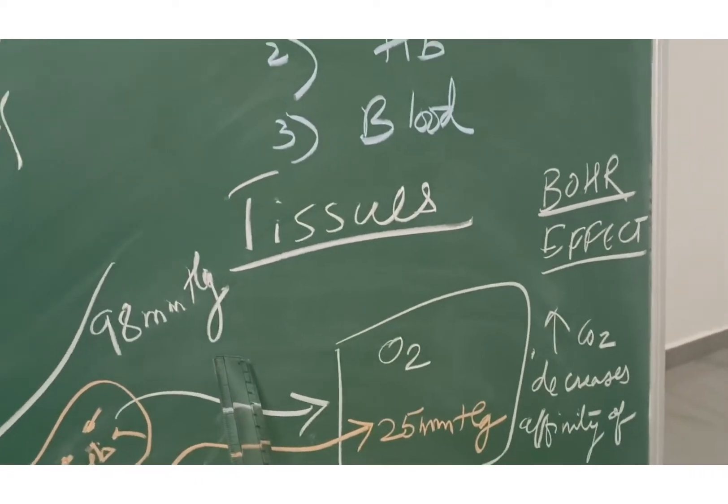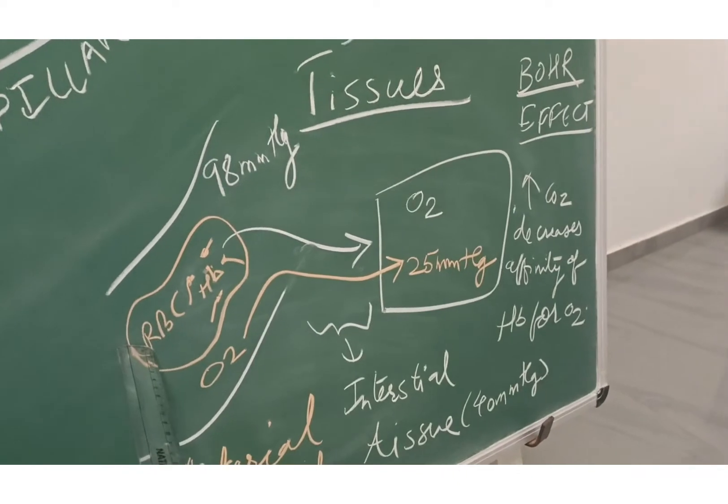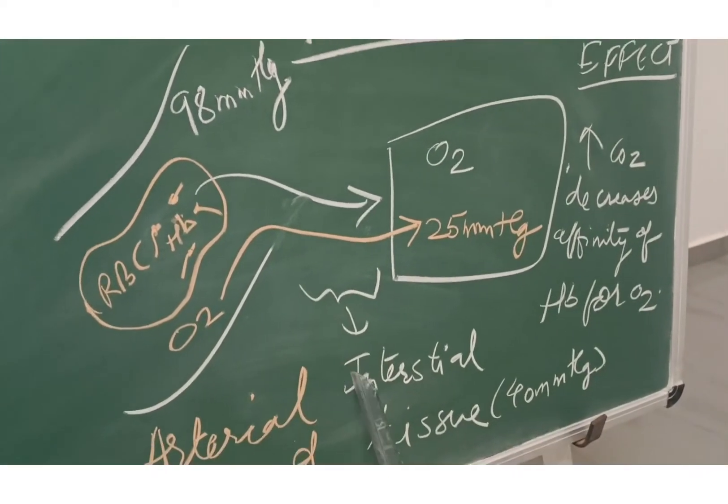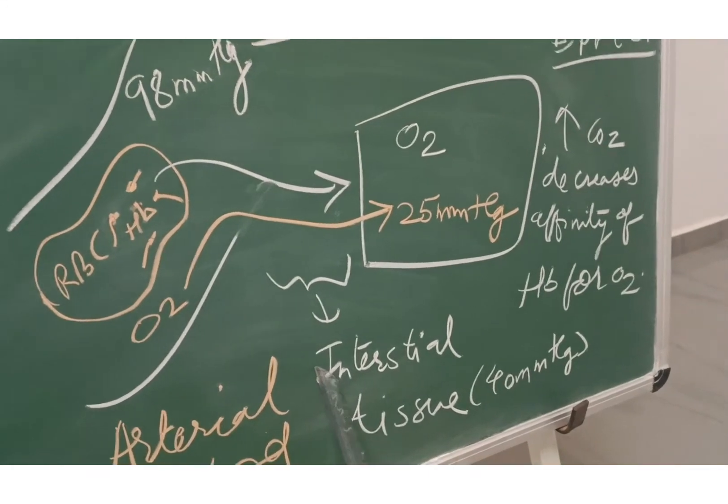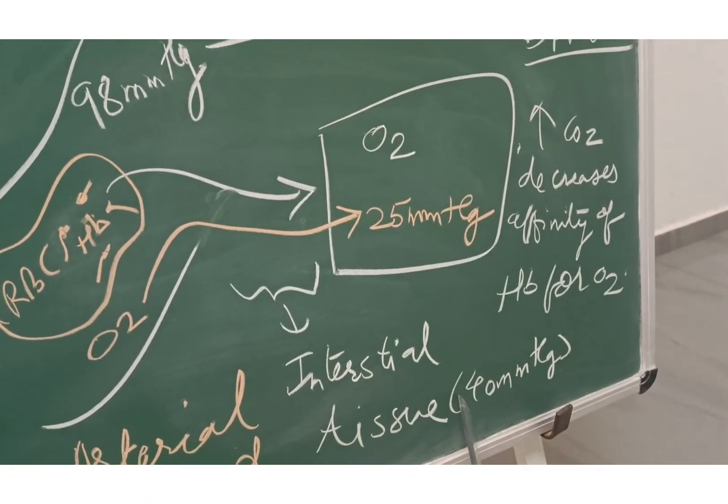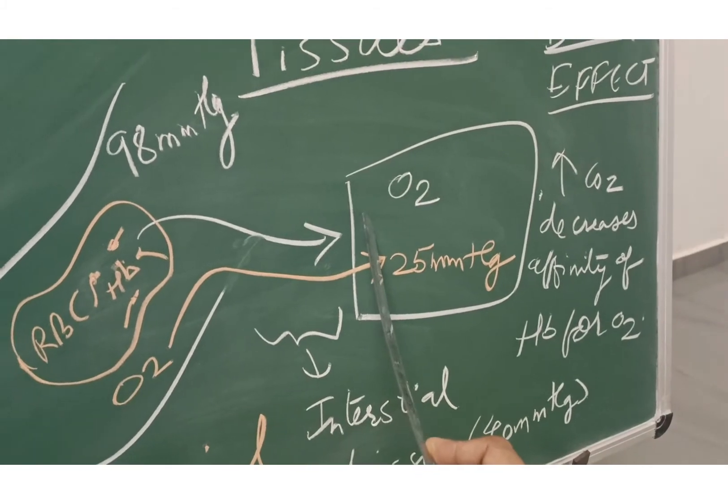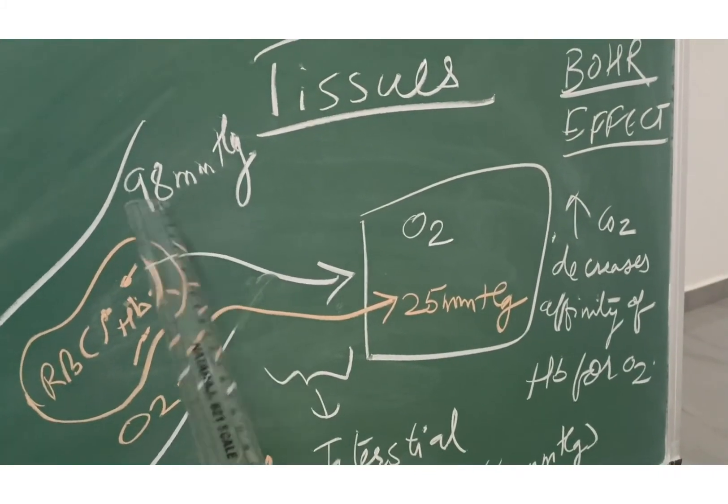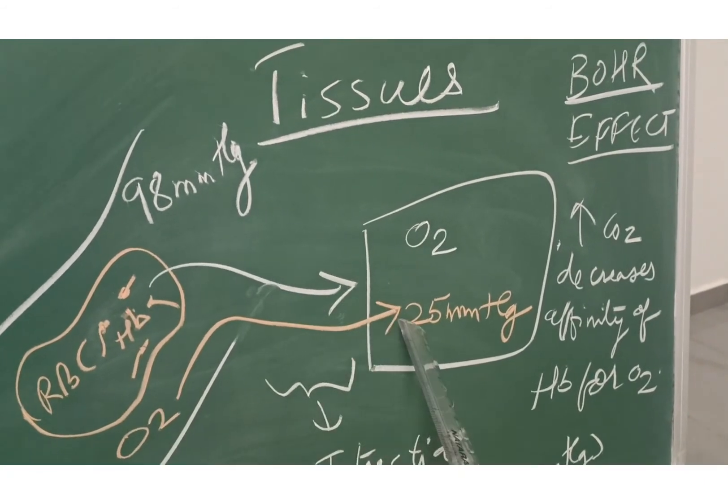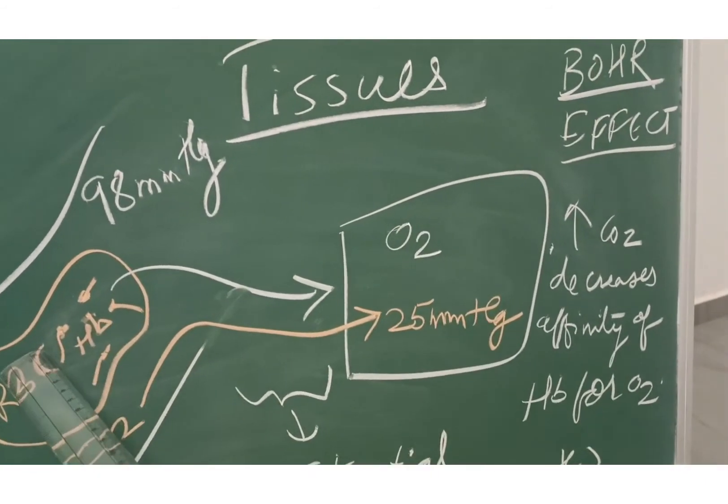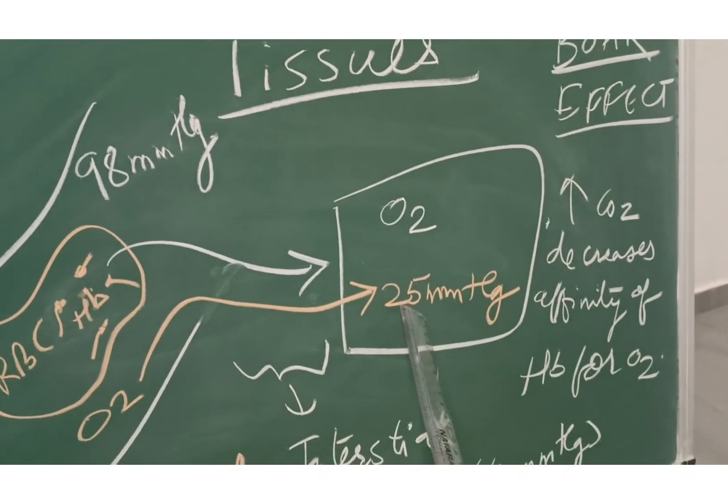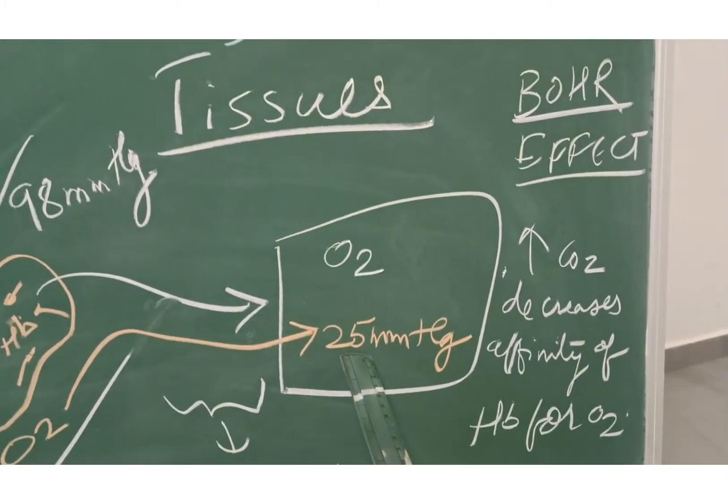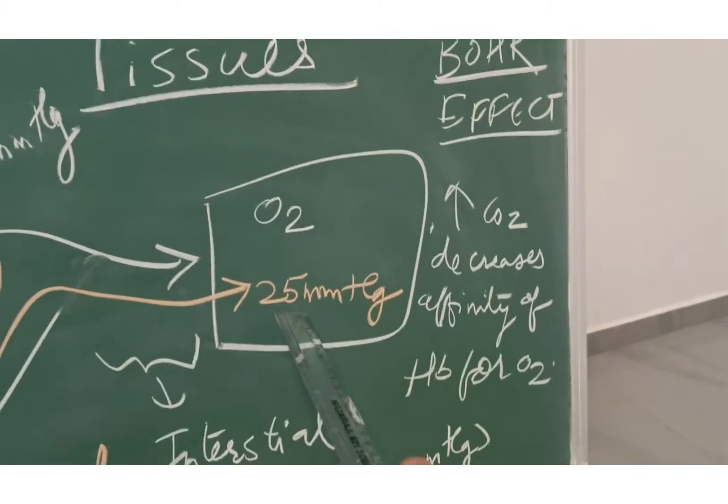Now let's see what is happening at the tissue level. You can see here, this is your RBC, this is the oxygen in the plasma, and this is your interstitial tissue. Interstitial tissue has a pressure of 40 millimeters of mercury and tissues 25 millimeters of mercury. The pressure in blood is 98 millimeters of mercury, so oxygen from the RBC and plasma comes into the tissues. This is how the transport of oxygen occurs at the tissue level.